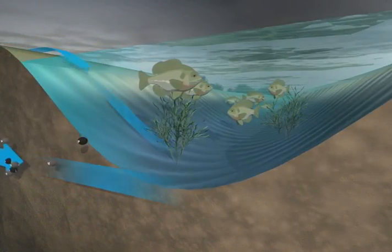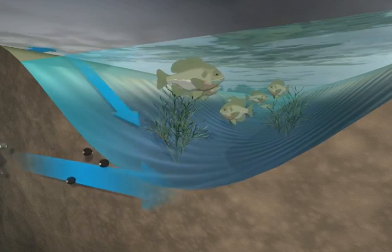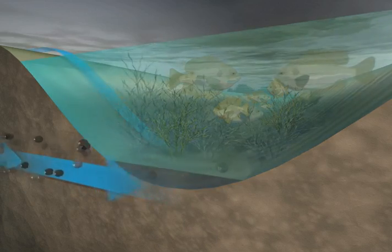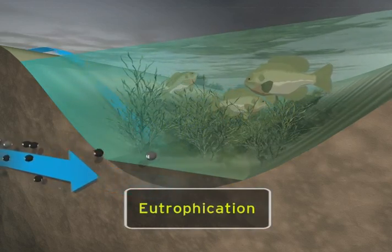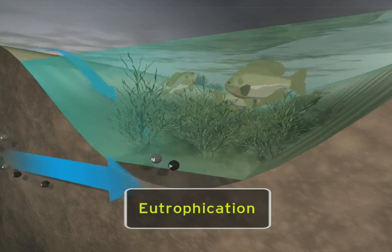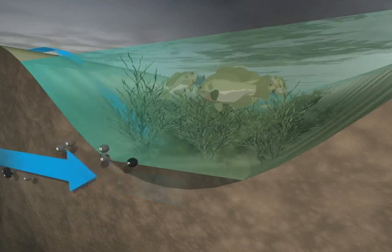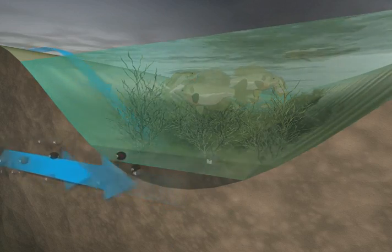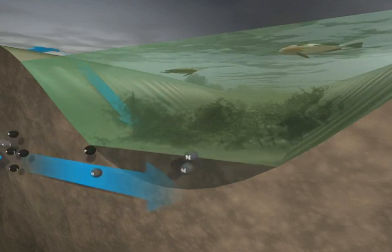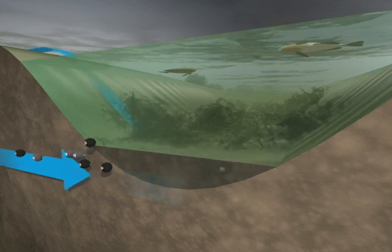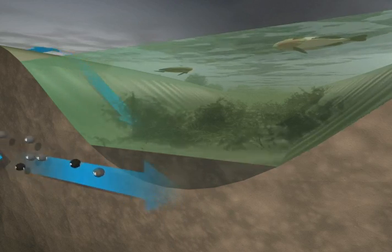Excess amounts of nitrogen and phosphorus in surface water speeds up the growth of algae and aquatic plants, a process known as eutrophication. When this excess plant growth dies and begins to decompose, it uses up dissolved oxygen in the water. This then limits the amount of oxygen that is available to other organisms, including fish. Without enough oxygen, fish die.